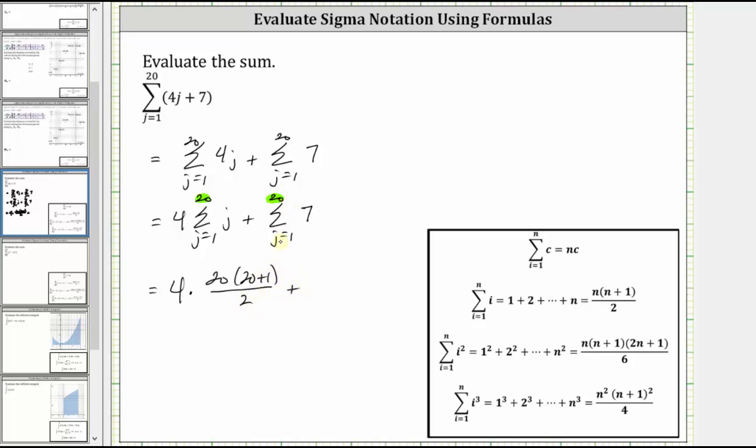And then plus the sum from j equals one to 20 of seven is equal to 20 times seven. Let's simplify here. There's one two and two and two twos and four. This gives us two times 20 times 21 plus 20 times seven.